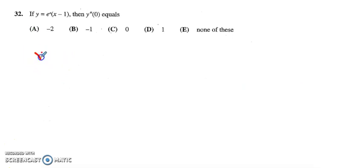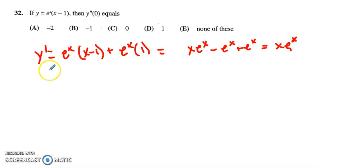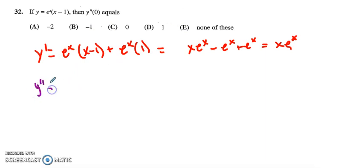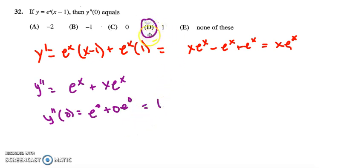Problem 32, they want y double prime, so we'll start with y prime using the product rule. e to the x goes to itself times (x minus 1) plus e to the x times the derivative of (x minus 1), which is just 1. I'll distribute and clean it up to get x e to the x minus e to the x plus e to the x, which is just x e to the x. So then I can do y double prime: the derivative of x is 1 times e to the x plus x times the derivative of e to the x. That is my y double prime function. Plugging in 0, I get e to the 0 plus 0 times e to the 0, and e to the 0 is 1, so it's 1 plus 0 or 1, and my answer is D.